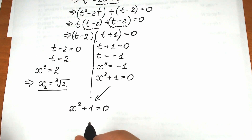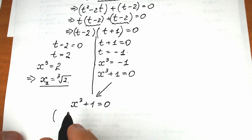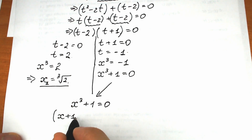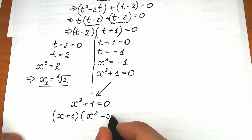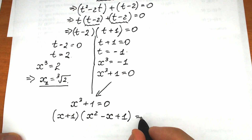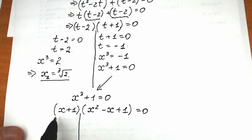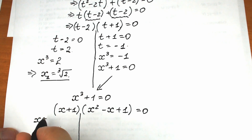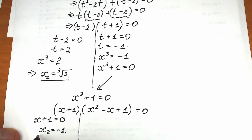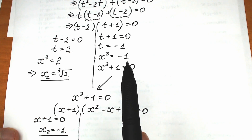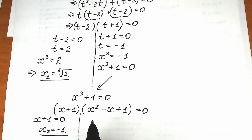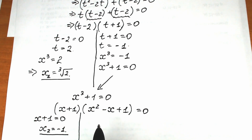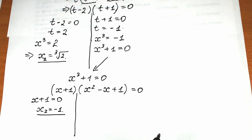This is a sum of two cubes: x cubed plus 1 cubed. Applying the sum of cubes formula, we get (x plus 1) times (x squared minus x plus 1) equals 0. From x plus 1 equals 0, we get x₂ equals minus 1. The second factor gives a quadratic equation, which I expect will have complex solutions.